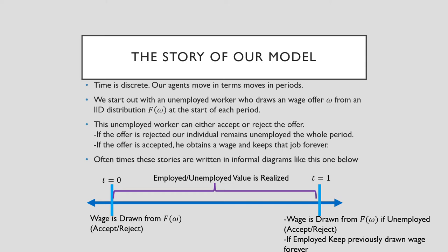Oftentimes, people write these sort of search stories in the diagram below. We see at the start of t=0, we have a wage drawn from a distribution and the choice to accept or reject. The employed or unemployed value is realized and at the start of t=1, a wage is drawn again from our distribution if the person's unemployed. However, if our individual did accept the offer at the start of the previous period, he keeps that wage forever till t equals infinity.